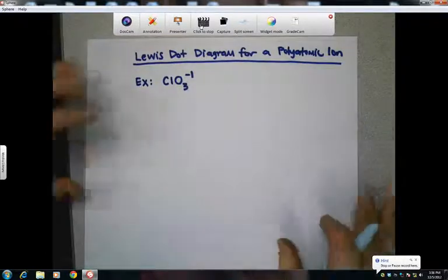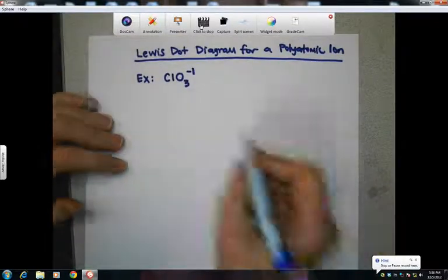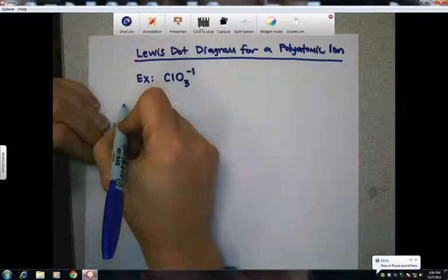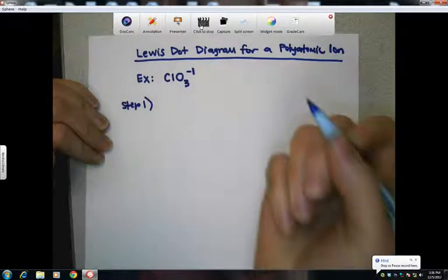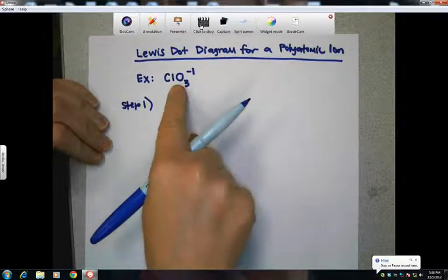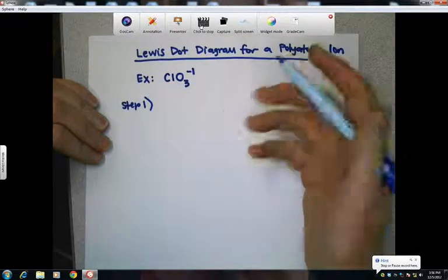The same way we draw all of our other Lewis dot diagrams. So, step number one. As you recall, you're going to add up the total number of valence electrons that each atom will contribute to the compound.